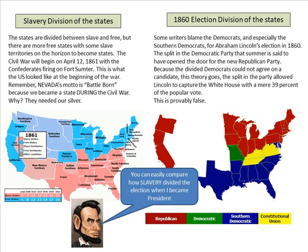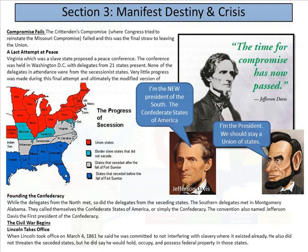This is what the U.S. looked like at the beginning of the Civil War — remember, Nevada's motto was 'Battle Born' for a reason. Obviously, compromise did fail because we did have a Civil War. The Crittenden Compromise, where Congress tried to reinstate the Missouri Compromise, failed — and this was the final straw to leaving the Union.